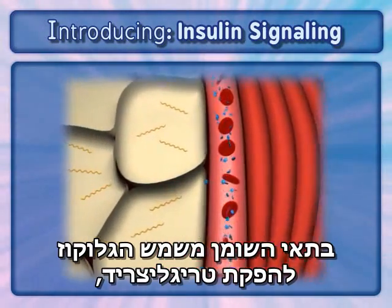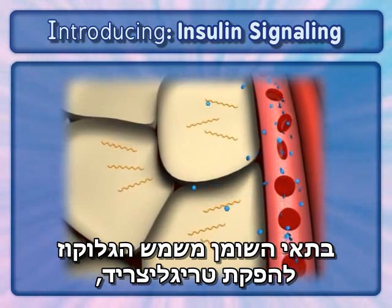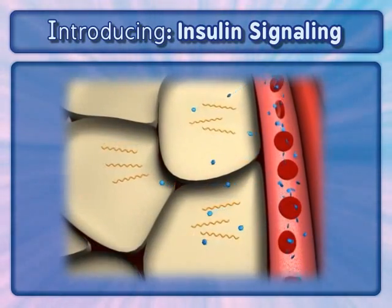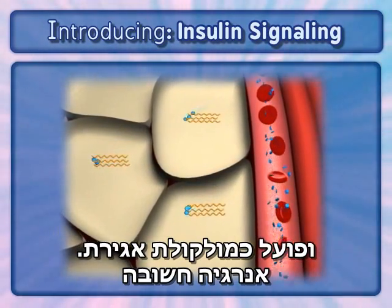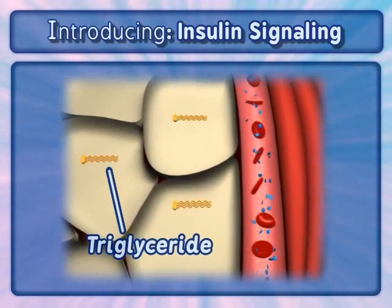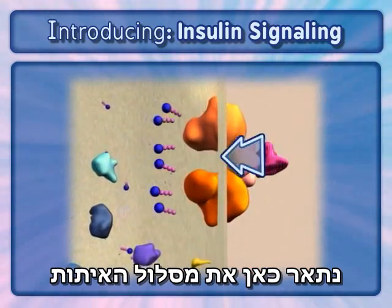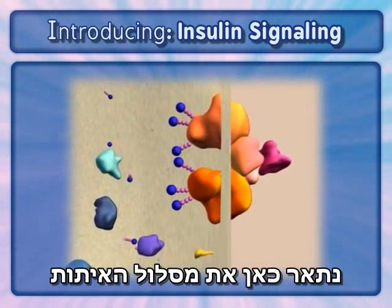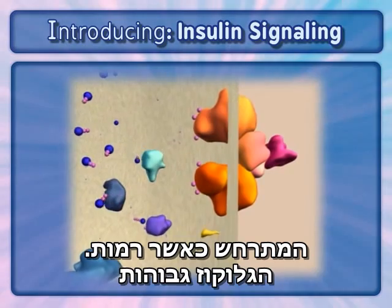In fat cells, glucose is used for triglyceride production and acts as an important energy reserve molecule. Here, we will illustrate the signaling pathway that occurs when glucose is at high levels.